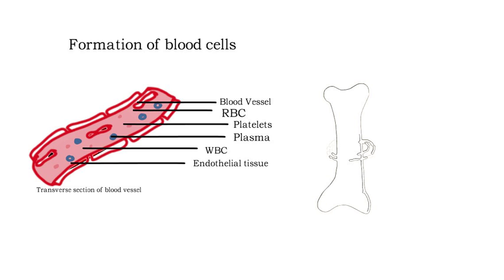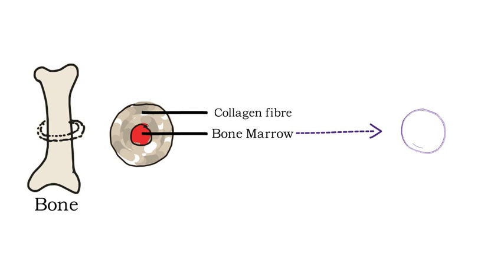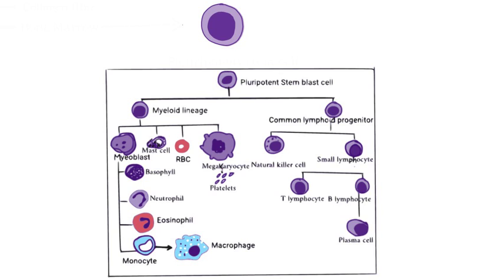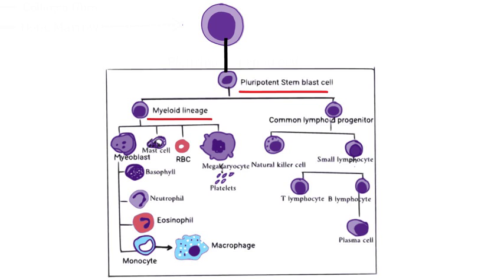The stem cells are further developed into two different lineages: myeloid lineage and lymphoid lineage. Myeloid progenitor cells give rise to RBCs, platelets, eosinophils, basophils, neutrophils, macrophages, and mast cells, which are responsible for allergic reactions. Lymphoid progenitor stem cells give rise to lymphocytes and natural killer cells. Note that white blood cells are thus formed from both lymphoid and myeloid progenitor cells.